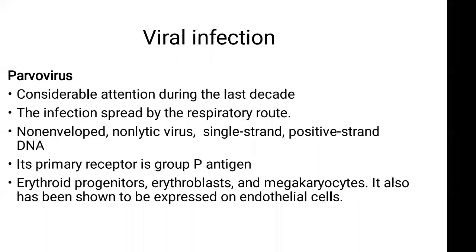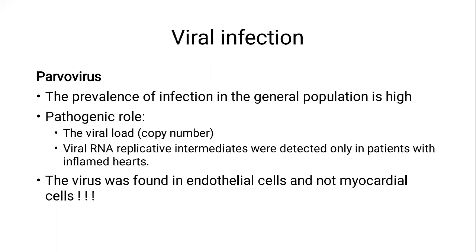The prevalence of infection by this virus is quite high in the general population. It is stated that up to 80% of the elderly group show positive antibodies against parvovirus B19. This raises the question of whether this virus has a pathogenic role or not. This question is answered by assessing the activity of the virus, which can be measured either by detecting the copy number, or the presence of viral replicative intermediates. Both relate to the activity of the virus and answer the question of its pathogenic role.